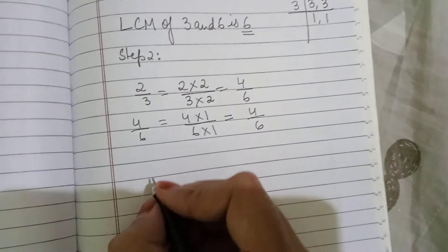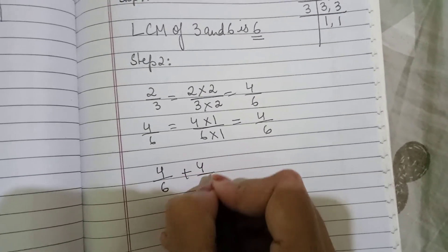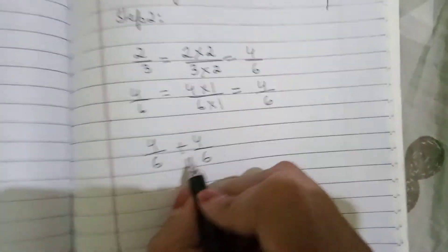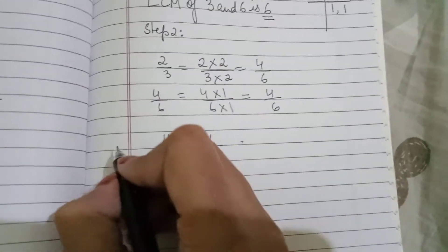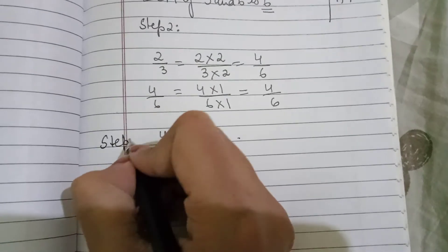Now can you see the denominators are equal. Although the numerators are also equal, but we have to see that denominator should be equal.